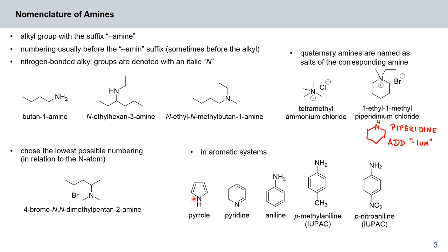When you incorporate amines into aromatic systems there are a few more unusual names. The five-membered ring case is pyrrole; the six-membered aromatic heterocycle is pyridine; and according to IUPAC — the International Union of Pure and Applied Chemistry — the compound aniline gives us names like para-methylaniline and para-nitroaniline.